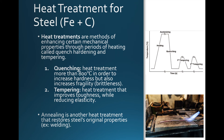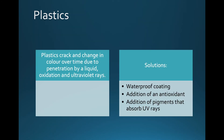Then we have plastics. Plastics can crack over time and change color because of light and UV rays. Liquids can also alter the structure of plastics and cause cracking, and oxygen can react with plastic and cause these same problems. To protect plastics, we can use a waterproof coating, add an antioxidant to prevent oxygen from reacting with it, and use special pigments mixed into the plastic that absorb UV rays so the plastic itself doesn't crack.